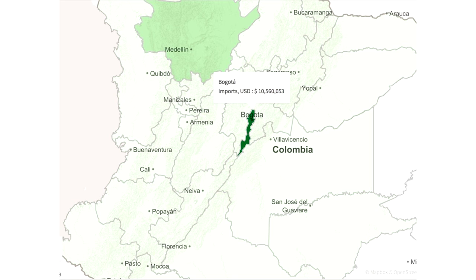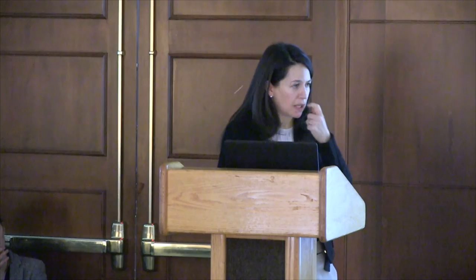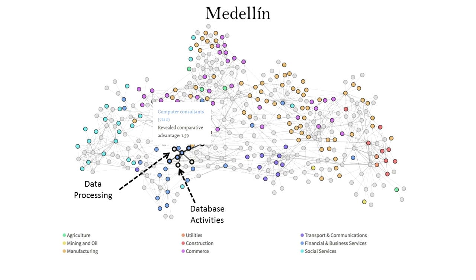Every time we presented the International Atlas, someone would intelligently ask: what about services? Can't a country or city grow by investing in services? Now, at the sub-national level, because of the data we've been able to gather, we've created the industry space — you can now see all services and industries at the city level. This is an example for Medellin, where you can see strengths in banking, technology, and computer consultancy. Similarly to the product space, if you are strong in a particular service, you are likely to also succeed in related fields like data processing. The space is mapped by labor flows — people who work in a certain industry who also tend to work in these other industries in other places.